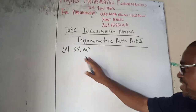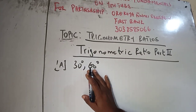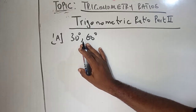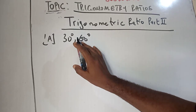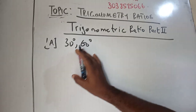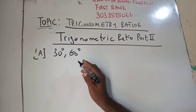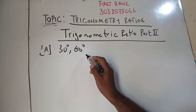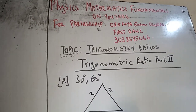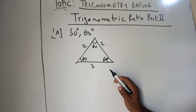Now, how do we develop trigonometry ratio of angle 30 and 60 degree? Like I said in the other video, the definition concerning trigonometry ratio shows the relationship between the angles and sides of a right angle triangle. To develop trigonometry ratio of angle 30 and angle 60 degree, we are going to consider an equilateral triangle of side 2 units each, where every interior angle is 60 degrees.